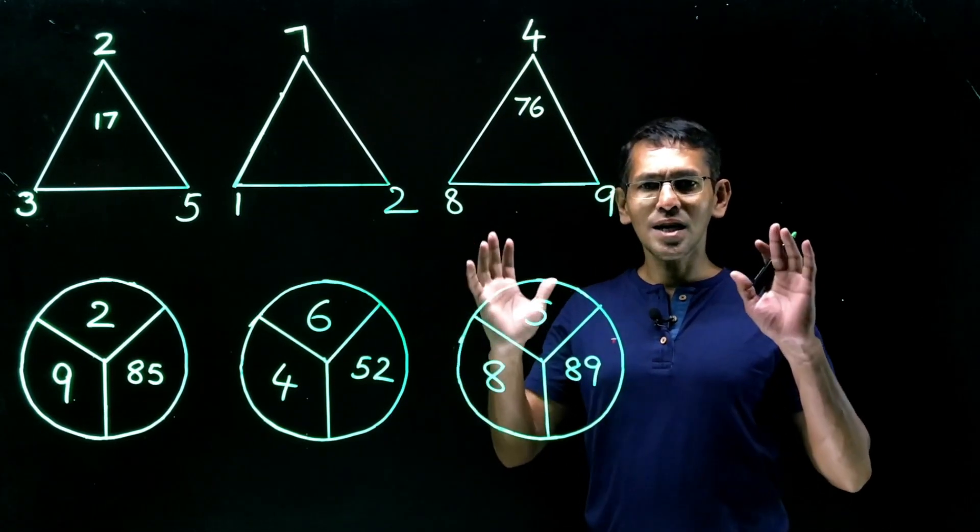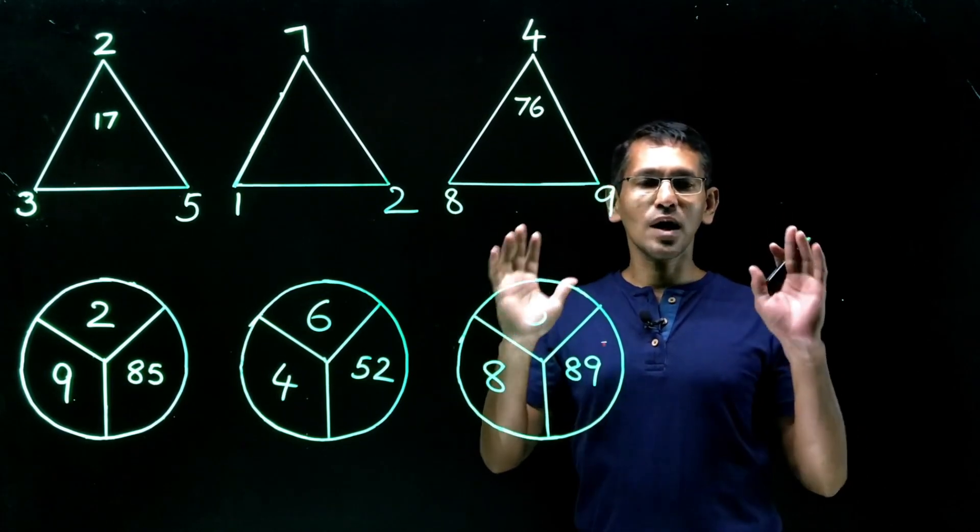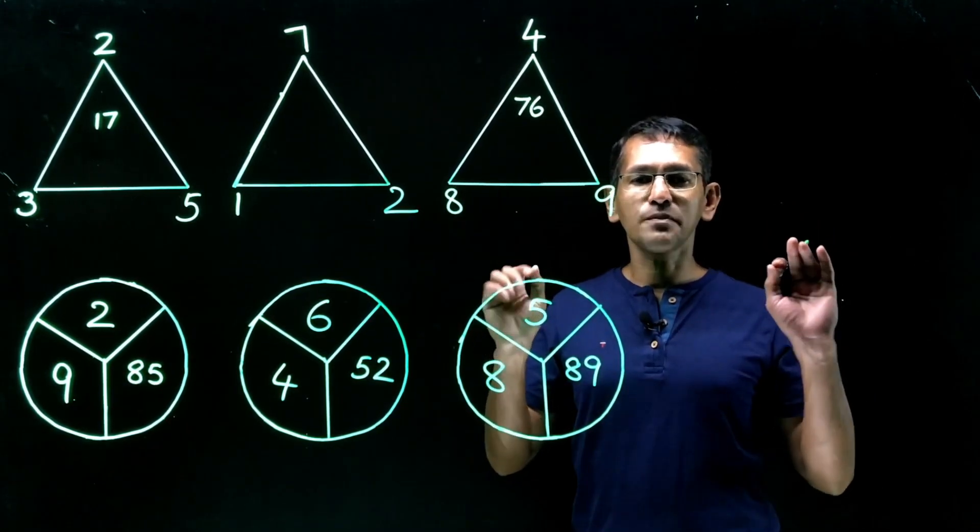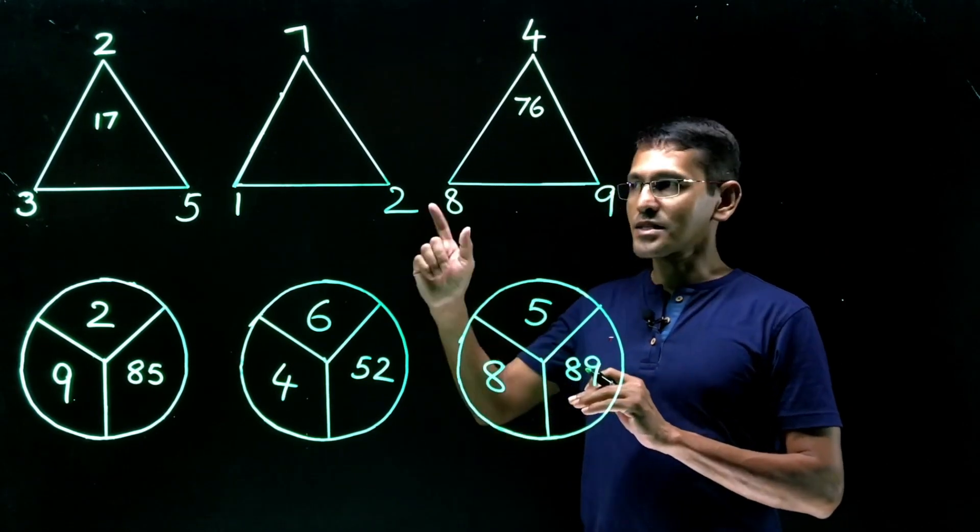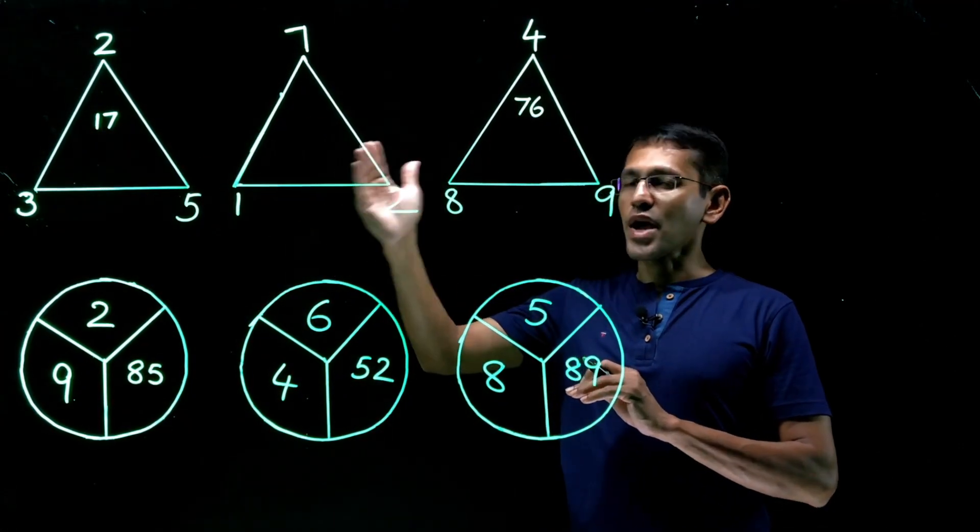Welcome back to the wallet. Today we are dealing with number puzzles type questions. This is one of the favorite areas of almost every aptitude test. Let's take a look at the first combination we have here, three triangles.